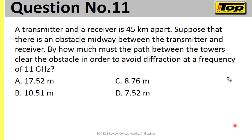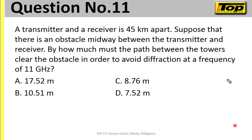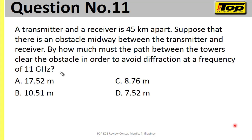Let's move on to number 11. The question is: a transmitter and a receiver are 45 kilometers apart. Suppose that there's an obstacle midway between the transmitter and the receiver. By how much must the path between the towers clear the obstacle in order to avoid diffraction at a frequency of 11 GHz?